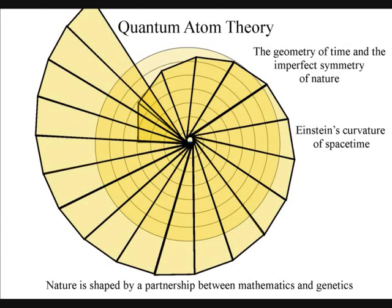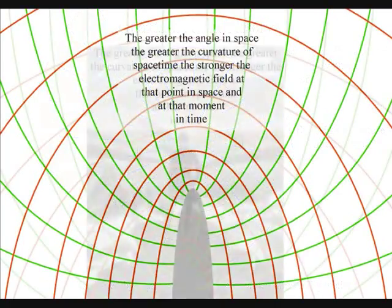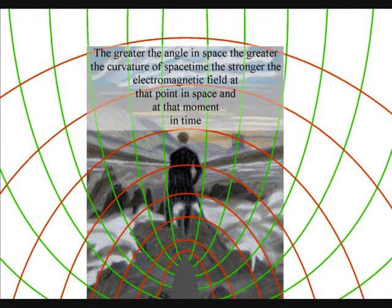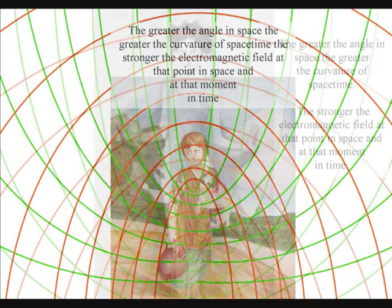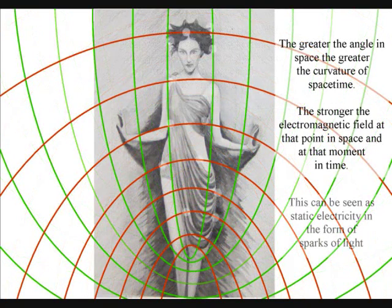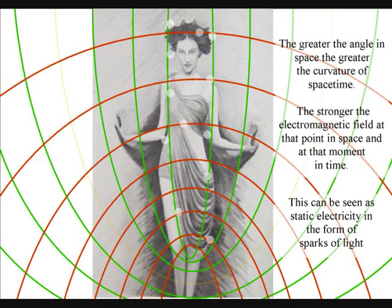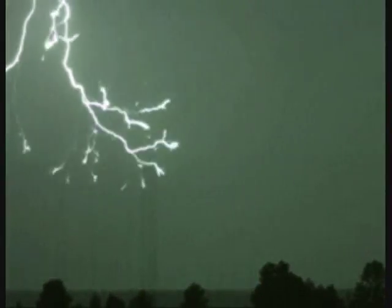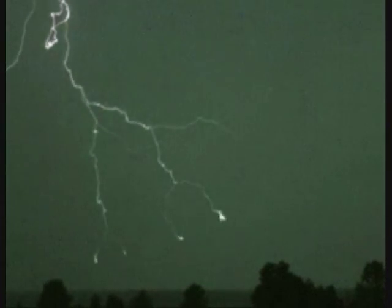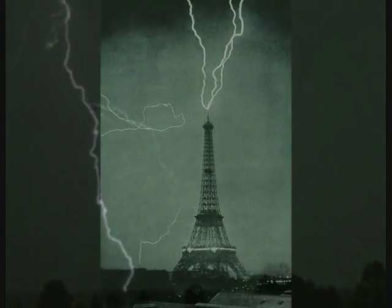The greater the angle in space, the greater the curvature of space-time, the stronger the electromagnetic field at that point in space and at that moment in time. This can be seen as sparks of light associated with static electricity. The atoms will even distort the geometry of space-time, creating electromagnetic discharge in the form of lightning.